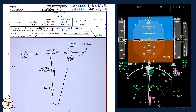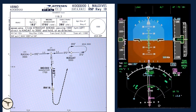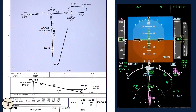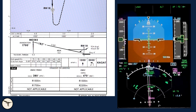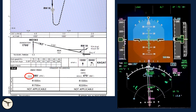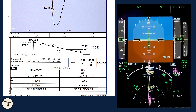We will fly an RNP approach to runway 18, but without RNP, as some aircraft do not have this capability. That means the minima is increased from 380 feet to 470 feet. When flying LNAV-VNAV, the autopilot follows a vertical path defined by the FMS, and minima is defined as decision altitude, DA. The decision to land or go around is made when reaching DA, just like an ILS approach.